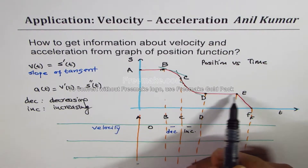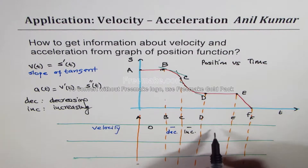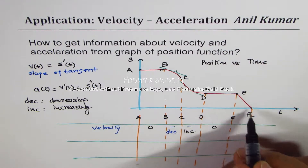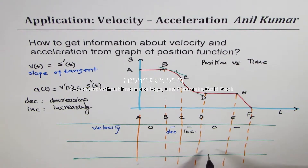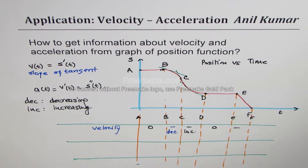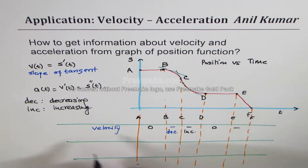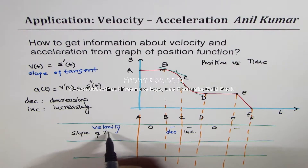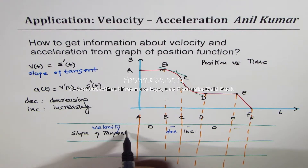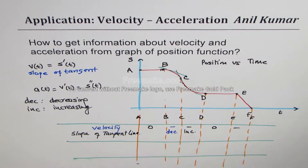From d to e, we notice the velocity is zero, and from e to f the tangent is negative, so velocity is negative. This is all about velocity, which you can easily figure out just by looking at the slope of the tangent line. Now let's talk about acceleration.